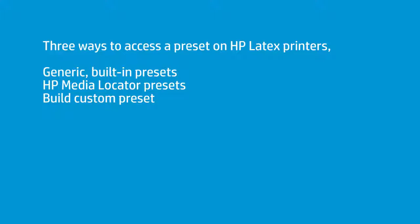So those are my three ways. You have generic presets — those are built into the printer and all ready to go. Then you have media locator presets — many of them are on the printer already, certainly a lot of the HP material, but the other ones are on the search right on your panel, or you can use the HP Media Solutions Locator, which is a foundational tool. The last way is to build your own preset — you can use the printer to do end-to-end profiling, which includes your first, second, and third step. Those are the three ways to make media on a latex printer.